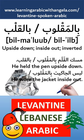بِلْمَألوبِ or بِلْقِلْبِ means upside down or inside out. For example: مِسِك الْأَلَم بِلْمَألُوبِ or مِسِك الْأَلَم بِلْقِلْبِ — He held the pen upside down. لبس الجاكت بالمألوب or لبس الجاكت بالقلب — He wore the jacket inside out.